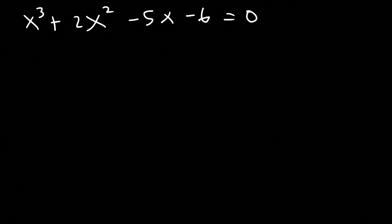The purpose of the rational zero theorem is for us to guess the first zero and then use that to get the others using synthetic division. We know the possible zeros are ±1, ±2, ±3, and ±6. So let's start with 1 — let's see if f(1) is equal to 0.